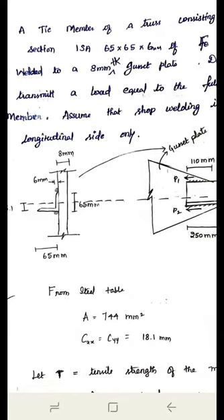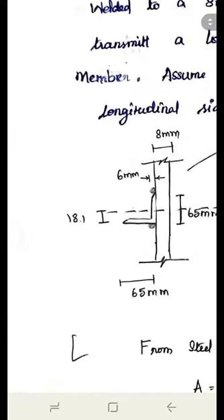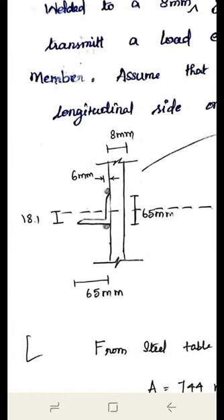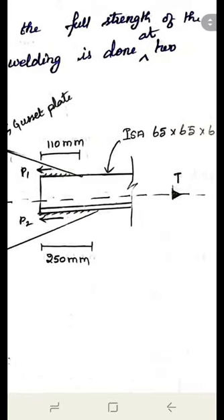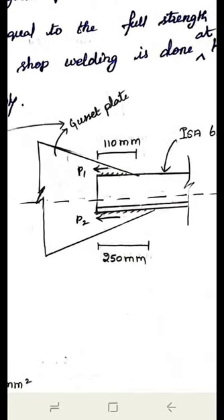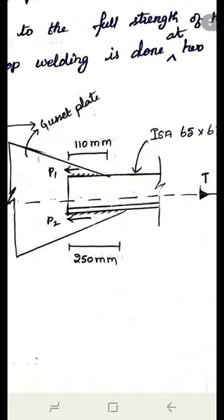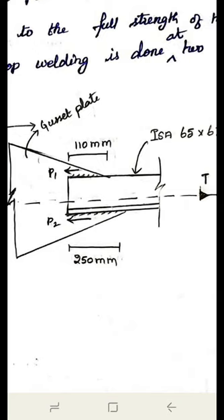Here they are connecting an angle section of size 65 by 65 by 6 mm. It is connected to a gusset plate of 8 mm thickness. I have provided weld at the top and bottom. This is the angle section of size 65 by 65 by 6 mm connected to a gusset plate, subjected to a tensile force. The tensile force is not directly given — they asked to design a weld for the full strength of the member. So first we have to calculate the full strength of the member. Let T be the full strength of the member.